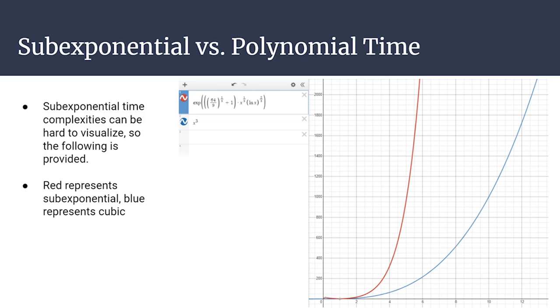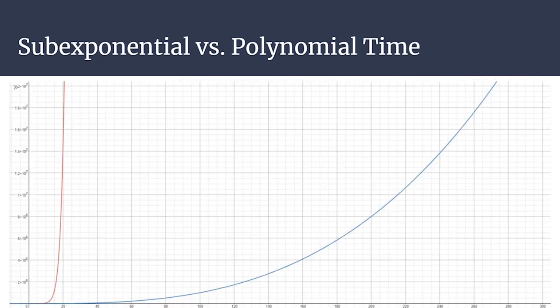Let's look at visualizations of what sub-exponential time complexity means. The red graph shows the sub-exponential complexity, and you can see it starts growing really fast compared to the blue cubic graph. When you zoom out, the red graph grows enormously in comparison. The x-axis shows this really starts to explode at around 20 bits, but RSA keys are typically 2048 bits. At that scale, the sub-exponential graph is so enormously large that it's completely impossible to factor an RSA key by brute force, even with a supercomputer and a billion years.